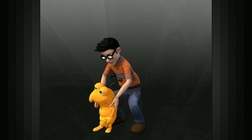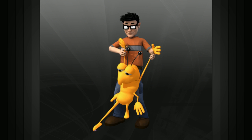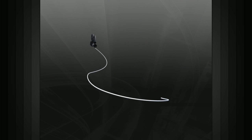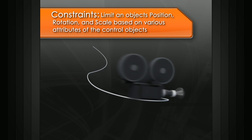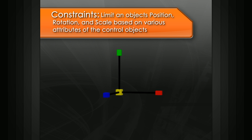In this lesson, we will learn about constraints. Earlier, we learned how to attach a camera to a motion path to make it move along a curve — this is done by using a path constraint. But what are constraints? Constraints limit an object's position, rotation, or scale based off of various attributes of the control object.